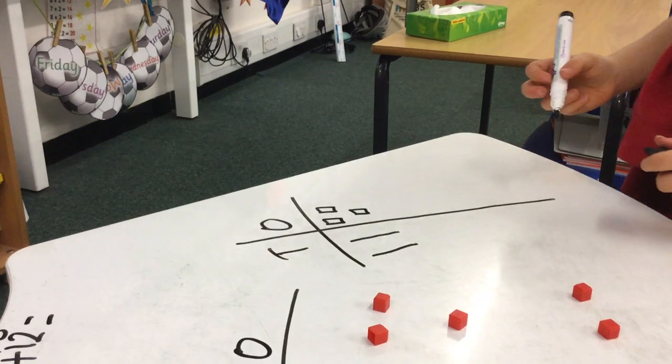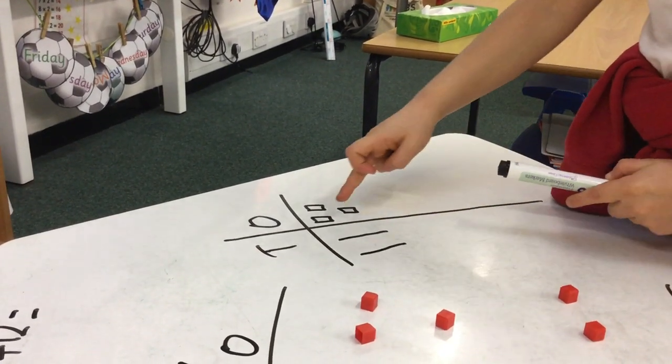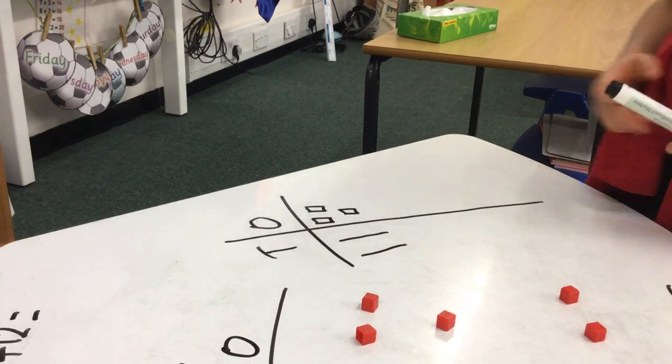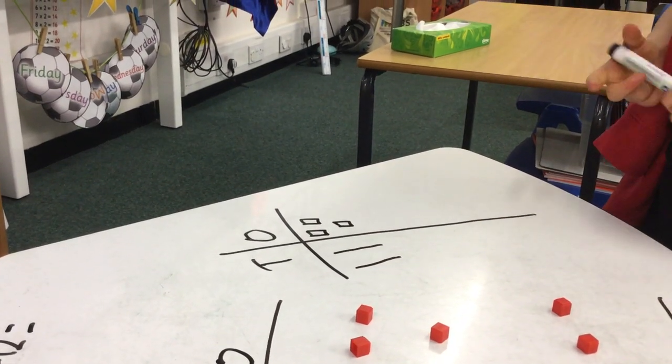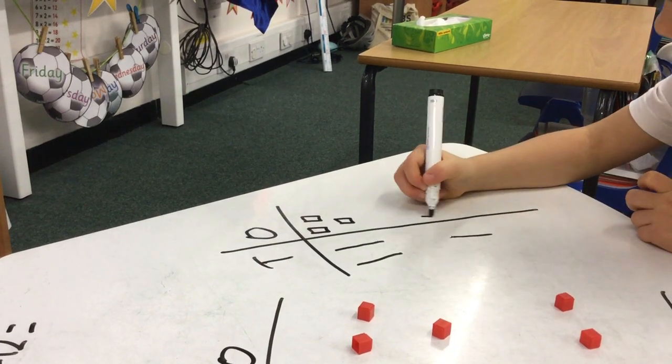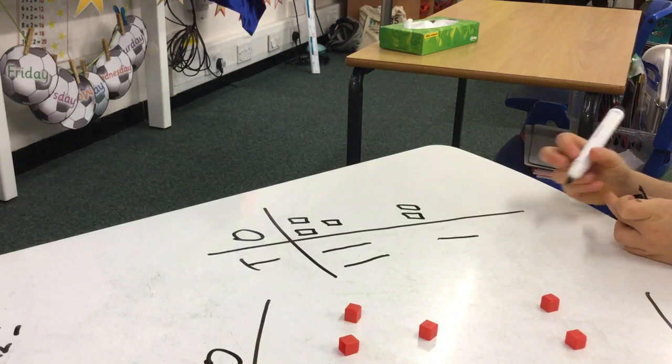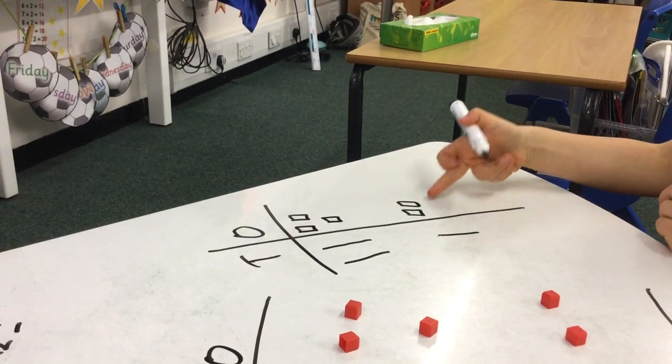Did you count what you've just drawn all together? 10, 20, 21, 22, 23. Brilliant. Then what are you going to do next? I'm going to put my 12 under me. Can you count that for me? 10, 11, 12. Brilliant.